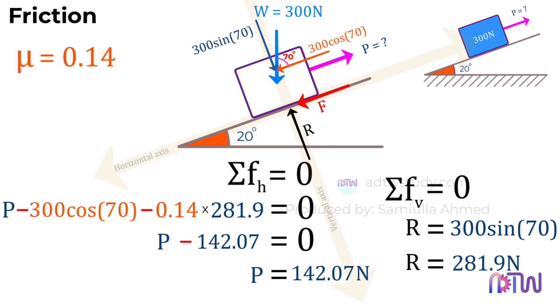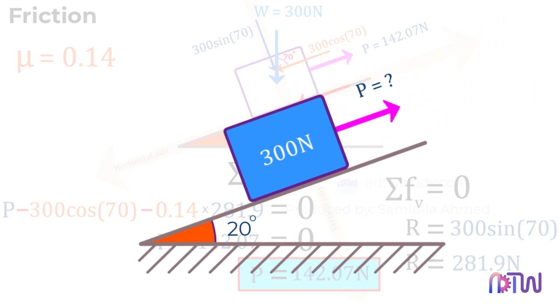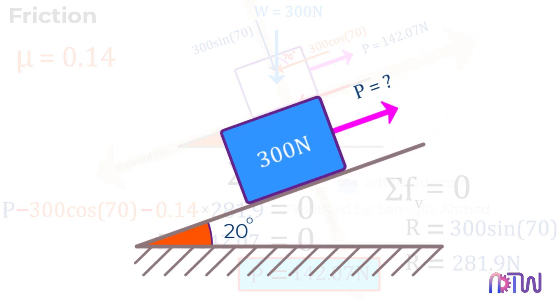Therefore, the force required to pull the box resting on an inclined plane is 142.07 newtons. I hope this video helped you understand how to calculate this. But what if this pulling force was also at an angle? How would you calculate the force required to pull the box then? To find out, watch my next video.